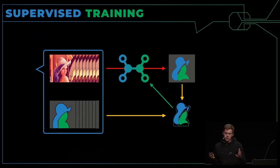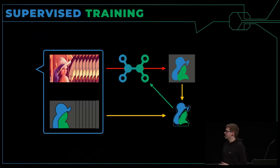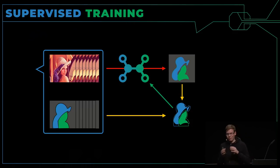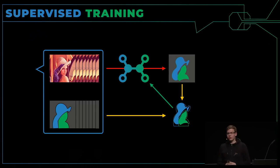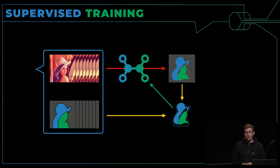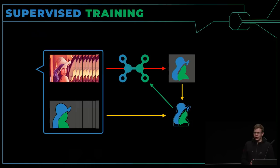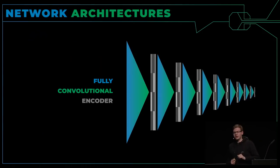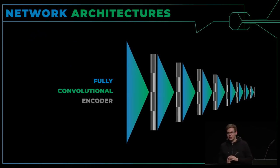Das werdet ihr auch sehr häufig hören im Zusammenhang mit Deep Learning: ihr braucht unglaublich viele Trainingsdaten, damit das funktioniert. Bilder sind sehr komplexe Dinge, und damit man Bedeutung herausziehen kann, braucht das Netzwerk eine große Anzahl von verschiedenen Bildern.